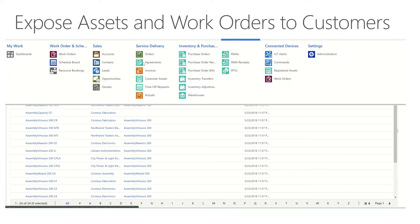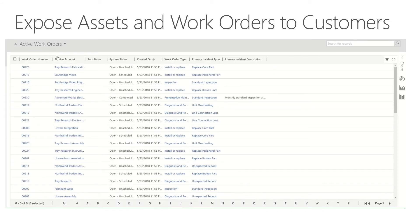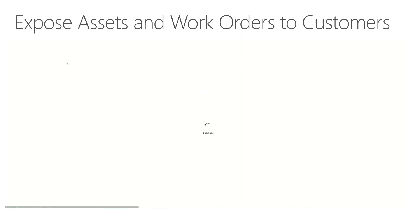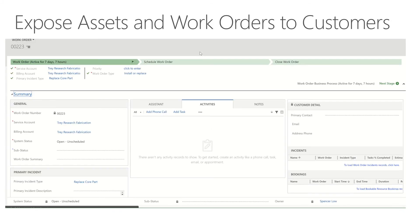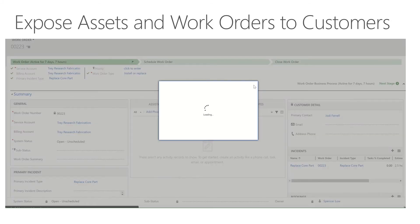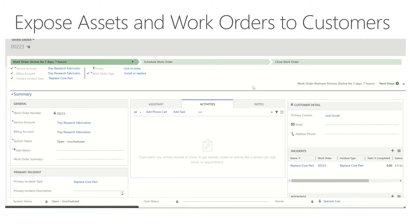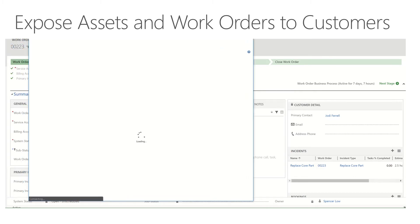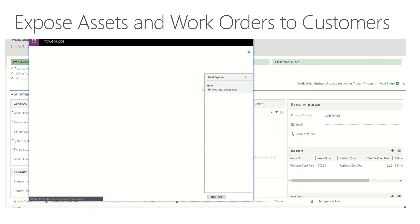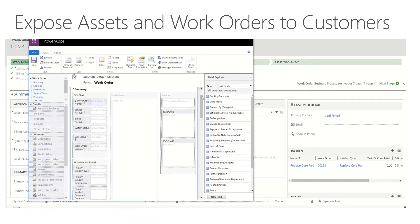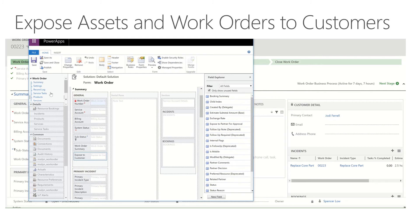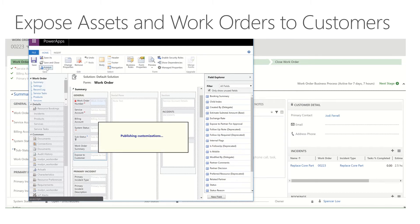Now I'm going to come back up to field service and look at work orders — this is a little more in depth. I'll open the work order, then through the ellipses at the end, I'm going to go to Form Editor. Here's a field that says 'Expose to Customer.' I'm going to add that right there to my form.